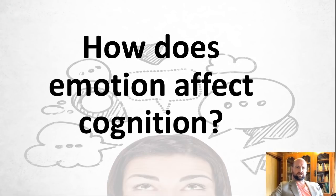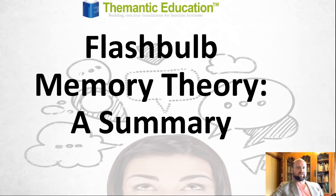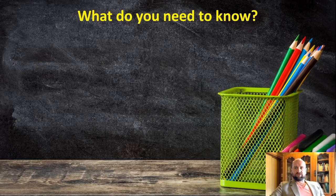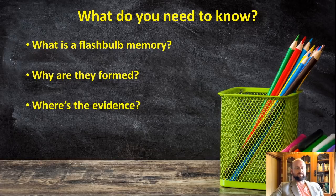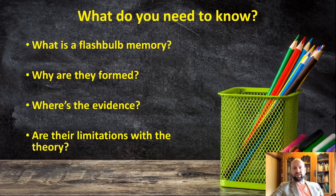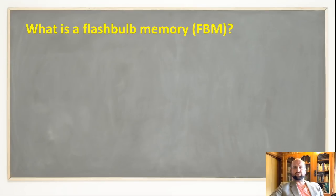Hey, IB psychology students — you have to be able to answer this question: how emotion affects cognition. In this video I'm going to explain that, and like all my videos I'm going to give you a couple of key points that most students miss but are going to help you separate your answers from the rest. We're going to answer this question by looking at flashbulb memory theory. You need to get the definition right, explain why they're formed, look at evidence, and then limitations.